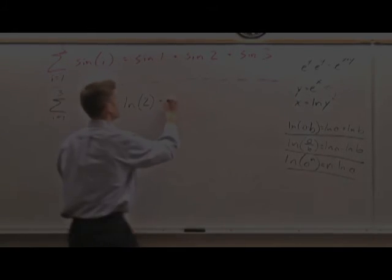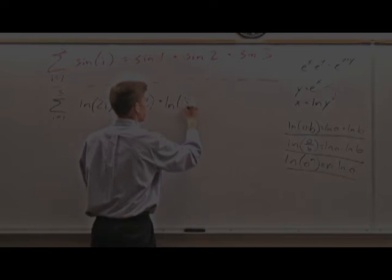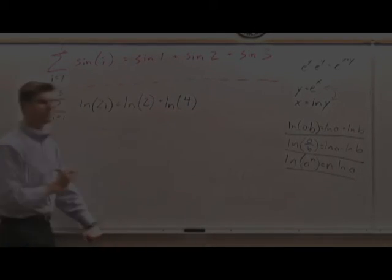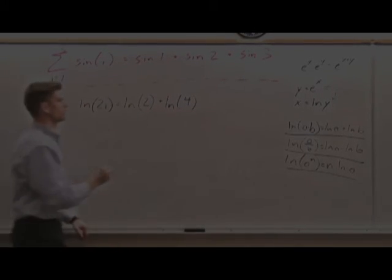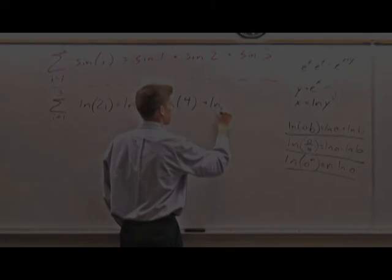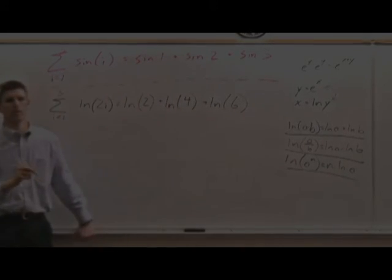Plus the ln of 2 times 2, which is 4. 4. And then the ln of 2 times 3, which is 6. ln of 6. What can I do with those?